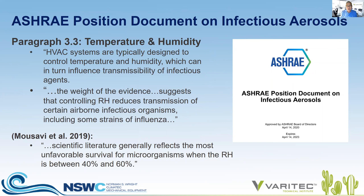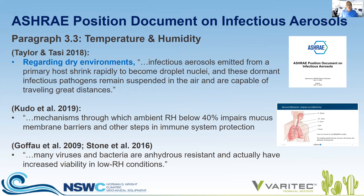Let's review some of the language from the ASHRAE position document on infectious aerosols, found on ASHRAE's Epidemic Task Force website. Referring to paragraph 3.3 on temperature and humidity, it states very clearly that the weight of evidence suggests that controlling RH reduces transmission of certain airborne infectious organisms, including some strains of influenza. The Musavi et al. report for ASHRAE in 2019 states that scientific literature generally reflects the most unfavorable survival conditions for microorganisms when the RH is between 40% and 60%.